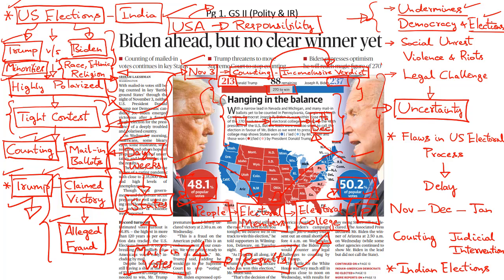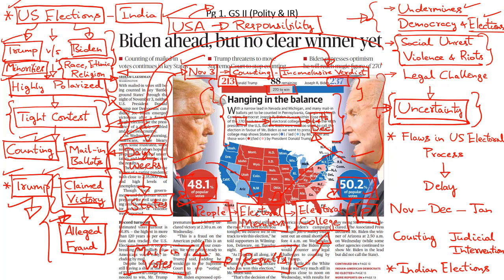The premature claiming of victory by Donald Trump and his unsubstantiated allegations of electoral fraud could even lead to social unrest, violence and riots in the country, because it might take a few more days or even weeks for clear results to emerge. This period of political uncertainty might last until January, thereby giving enough scope for the emergence of a legal and constitutional crisis in the United States. Donald Trump has already made it clear that he is going to approach the Supreme Court and legally challenge the electoral process in order to put an end to the counting of mail-in votes.